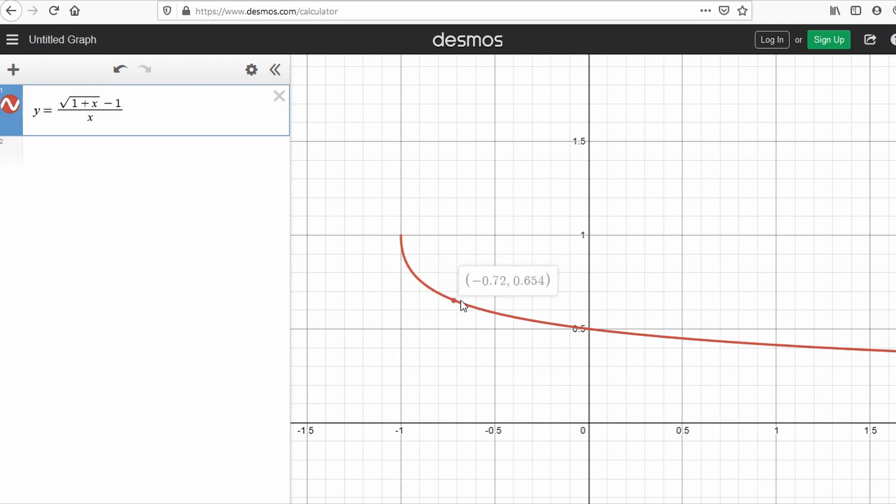The good thing about this is I can drag my mouse here to get values of x and y along the locus of the curve. You can see as I approach 0 from the left-hand side, I get closer and closer to 1 half. The function is not defined at 0 because of division by 0. However, if I approach 0 from both sides, we still approach 1 half. So the limit of 1 half still exists, although it is undefined at x equals 0.